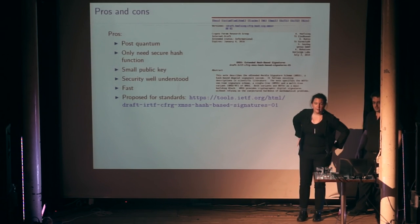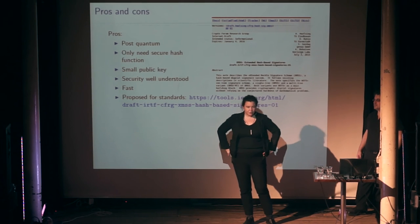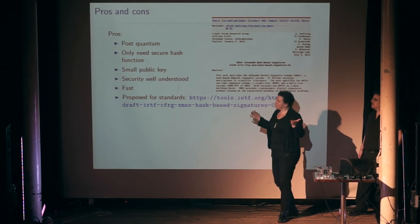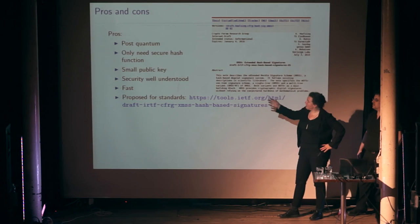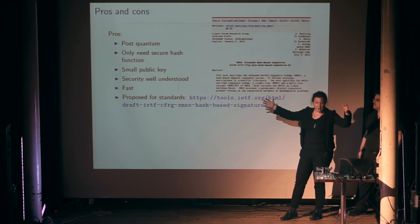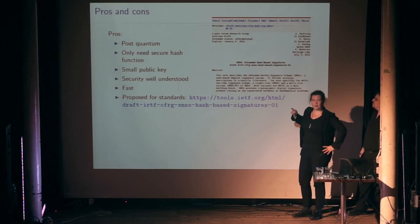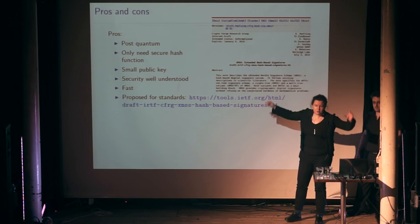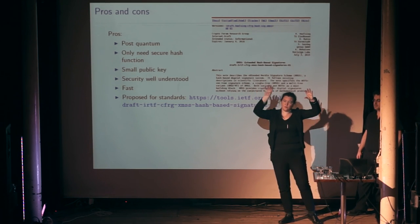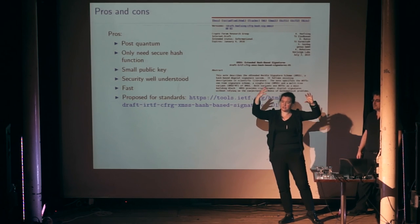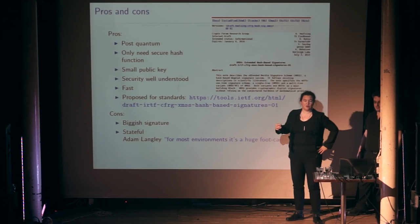These are very obviously post-quantum. Other than Grover, we don't really know anything that a quantum computer can do against hash functions. The public key — just this bottom of this tree — is fairly small and reasonably fast. It has been proposed for standardization, so this might be coming to an internet near you soon. But in this tree, you need to remember where you were. If you ever use one of those signatures again — you've already published the secret for it — then you're in trouble. This is something we call 'stateful' — a problem because you need to remember where you are. Adam Langley, who works for Google and does lots of crypto, said that for most environments, this is a huge footgun.